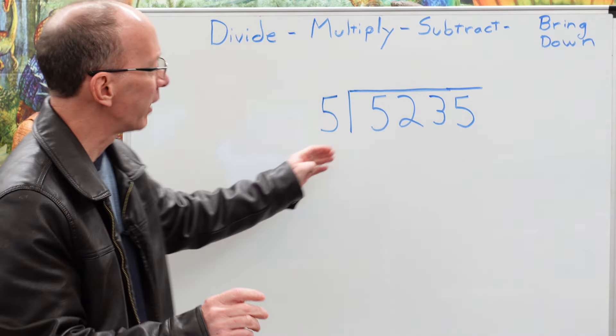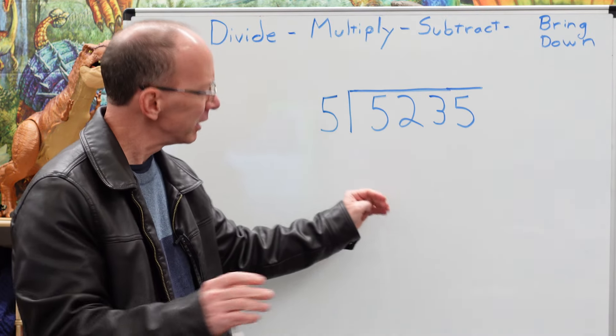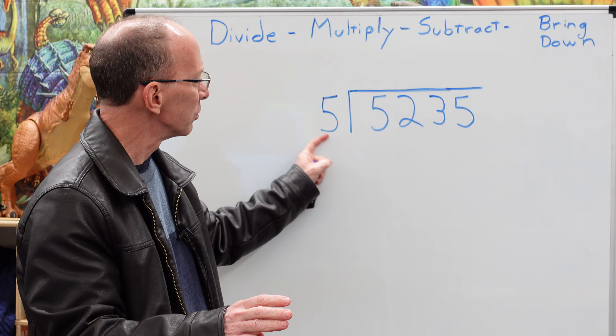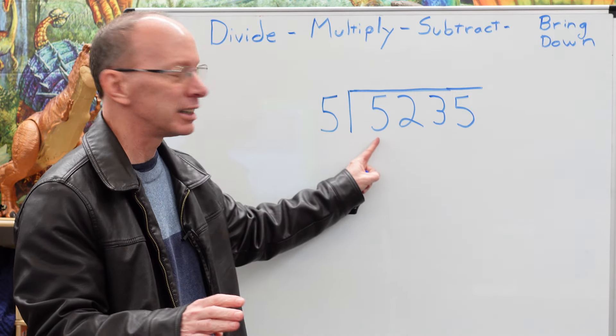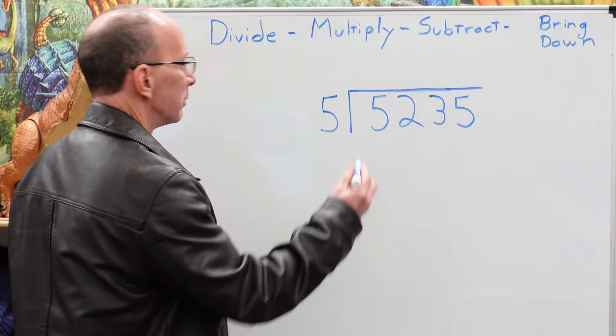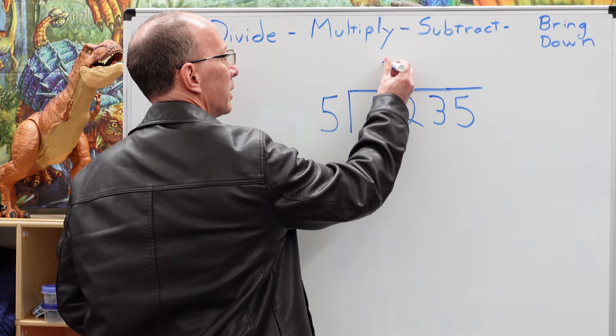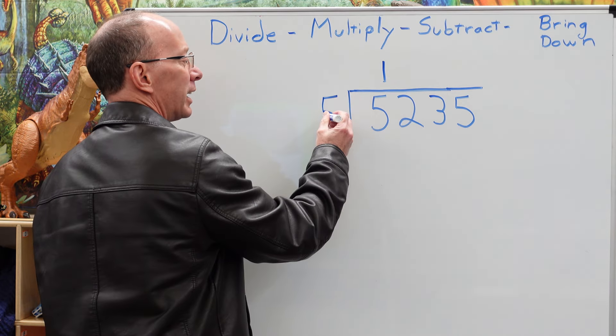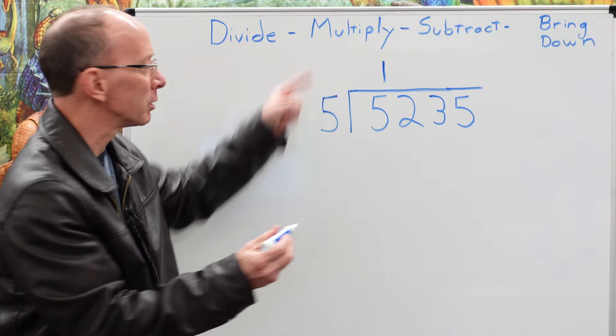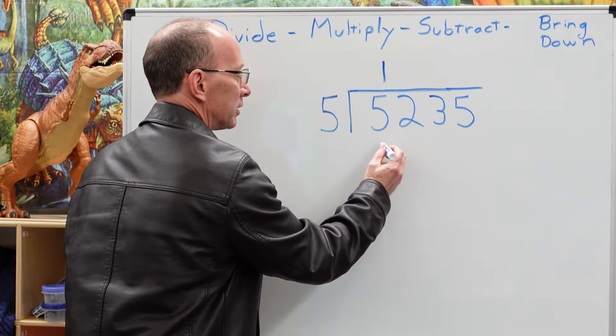First off, when we divide a bigger number like that, we just got to take it nice and slow, and we take a look at this right here. Can I put five into five? Yes, we can. So I'm going to go ahead and put the one right here, and one times five. Now I'm doing the second step right here, multiply. One times five is five.